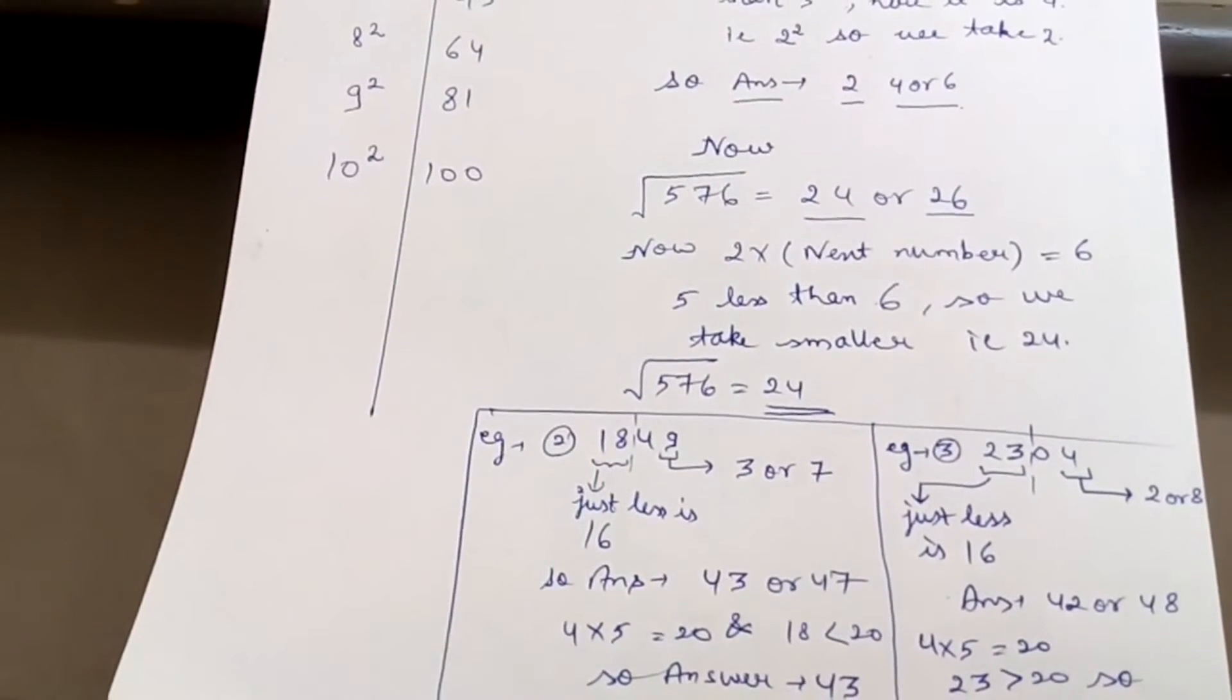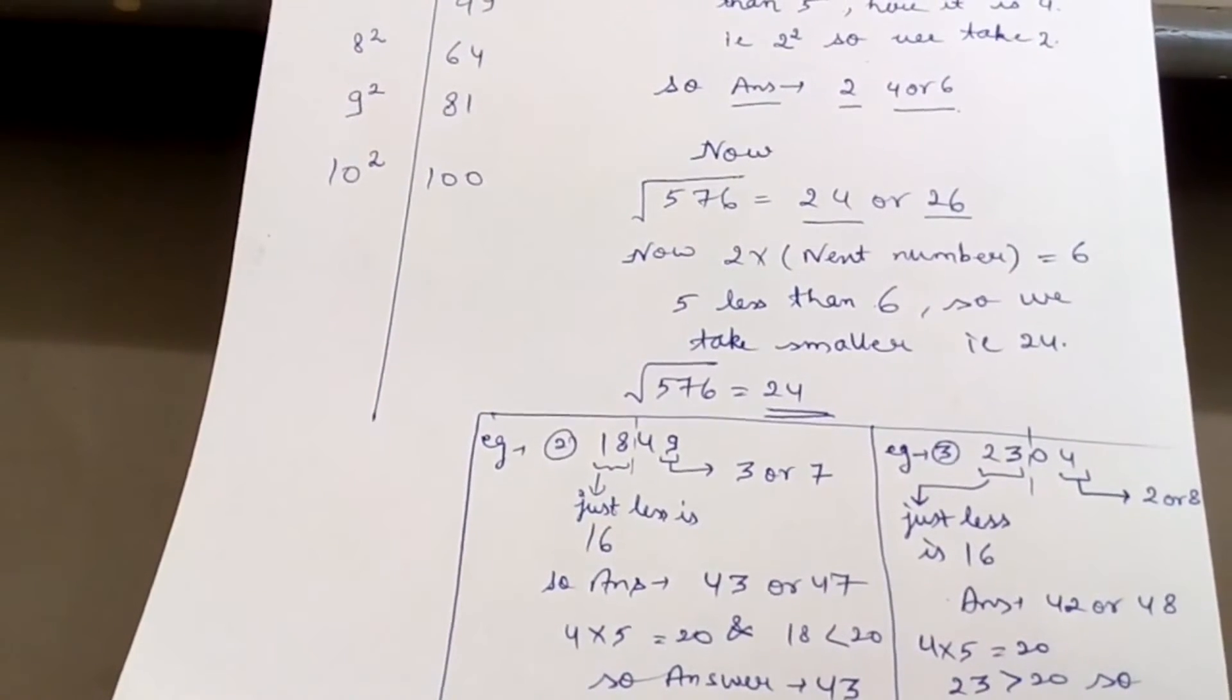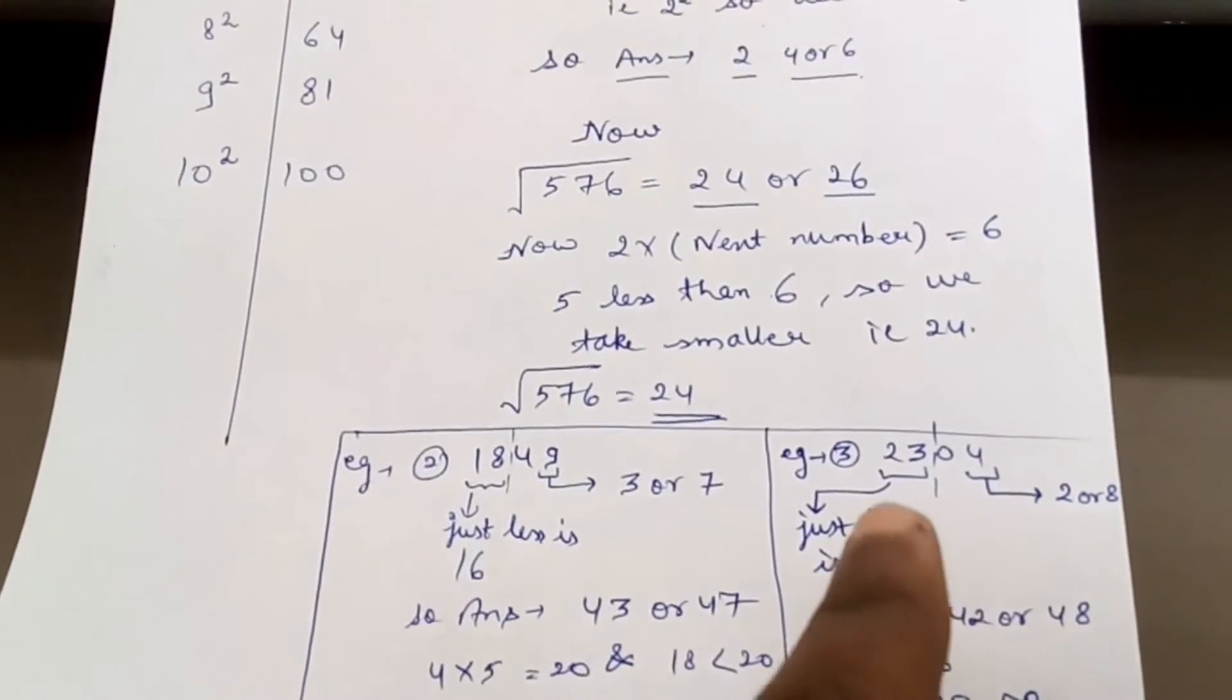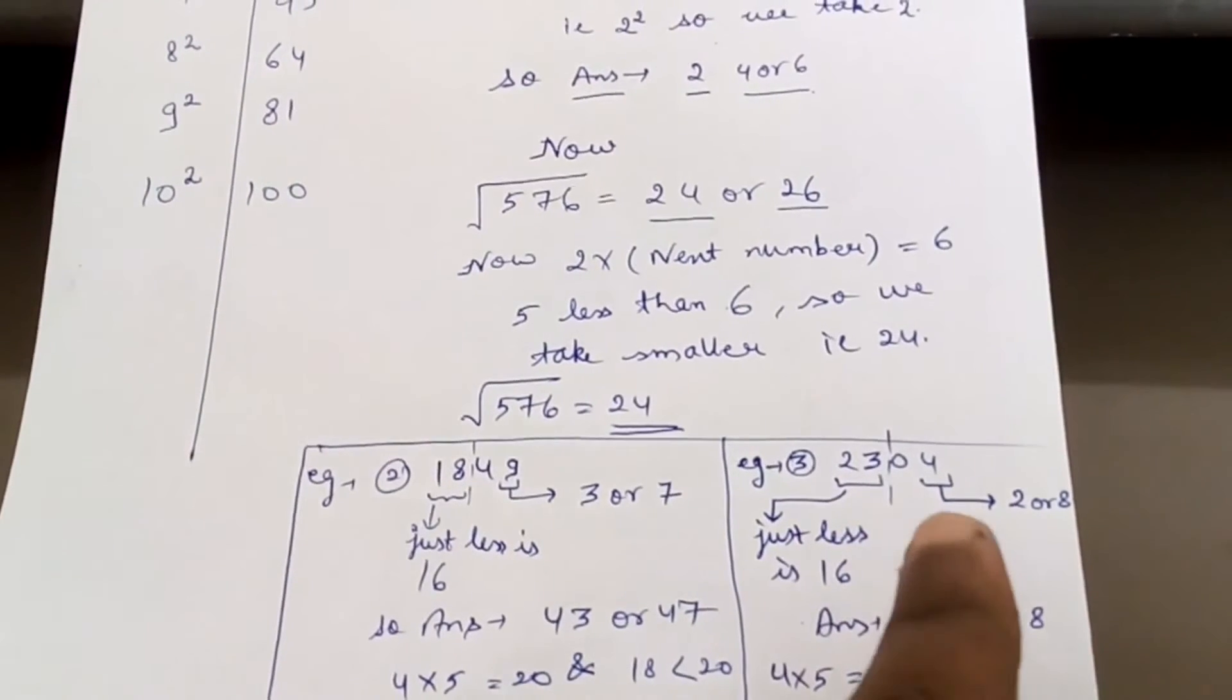Now again example: 2304. Here you look at the units place, that is 4. You see where 4 comes: here comes and here comes. So units digit of the square root will be 2 or 8.